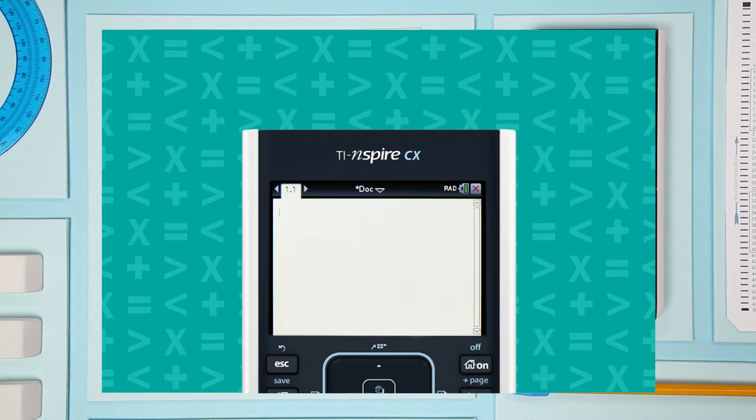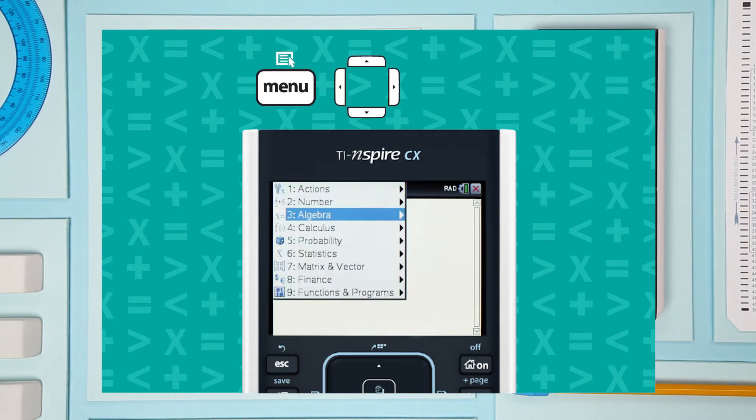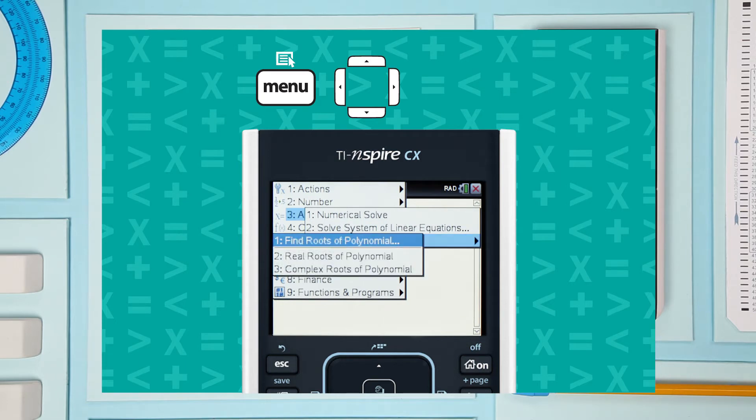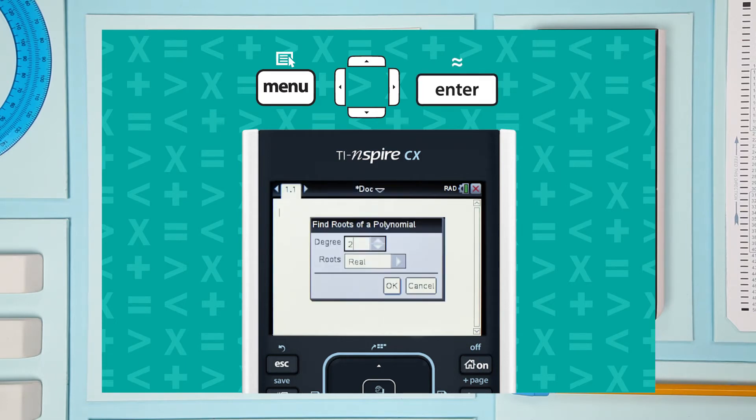To use this feature, just navigate through your handheld's menu starting from a blank calculator page. You don't enter the equation until the end. Select algebra, then polynomial tools, and find roots of polynomial. That opens this dialog box.